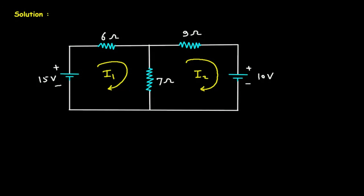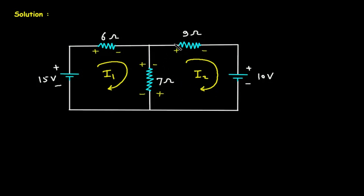According to the direction of current I1, this terminal will be positive and this will be negative. Similarly, according to the direction of current I2, this will be positive and this will be negative, and here this will be positive and this will be negative.